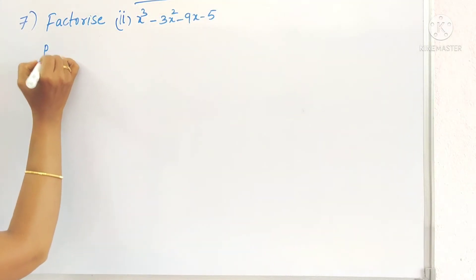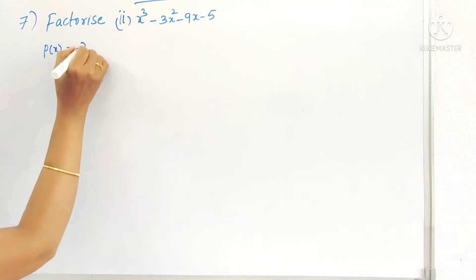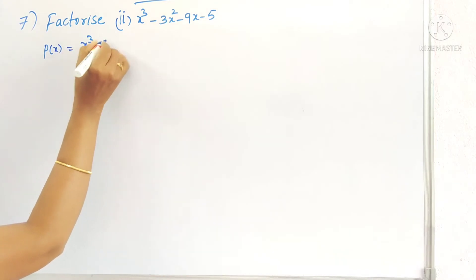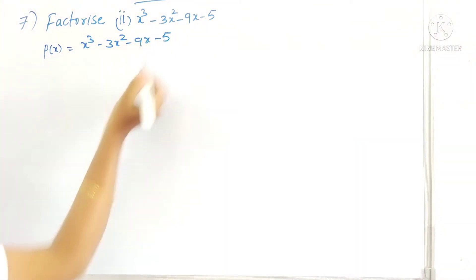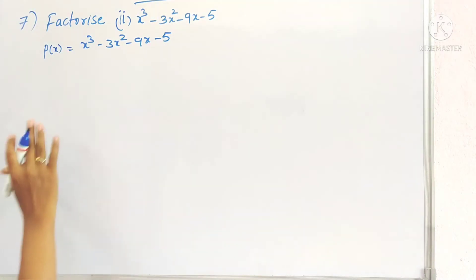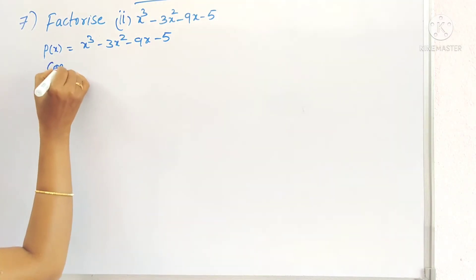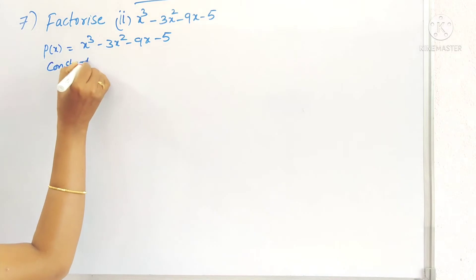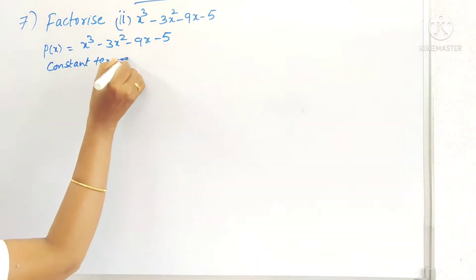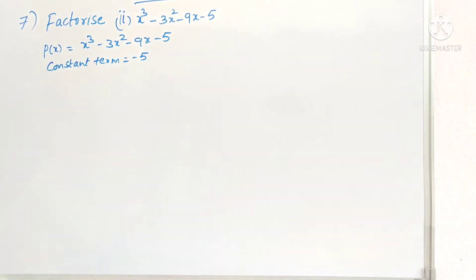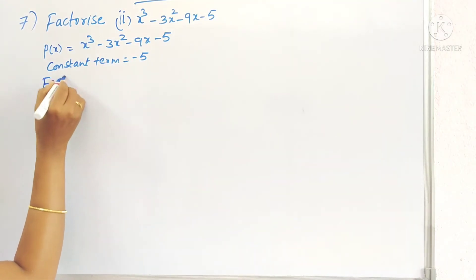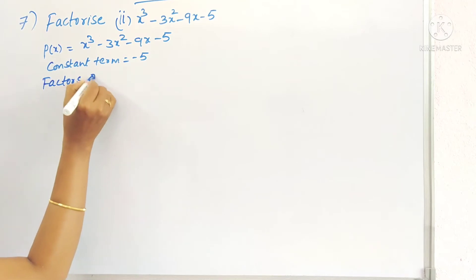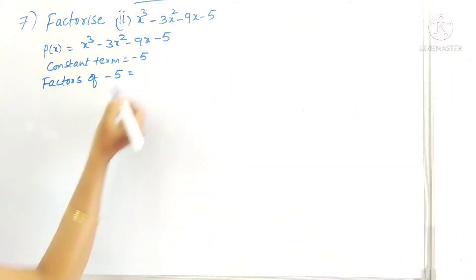First, write the given polynomial P of x and now identify the constant term — that means the term without any x. So here what is the constant term? The constant term is minus 5. So now write the factors for minus 5.